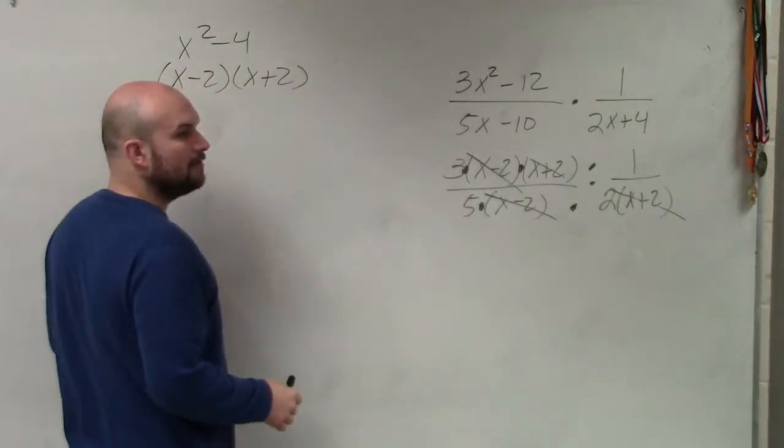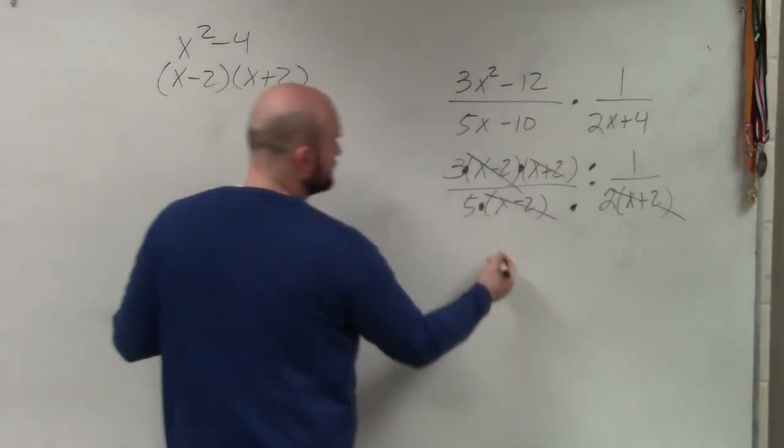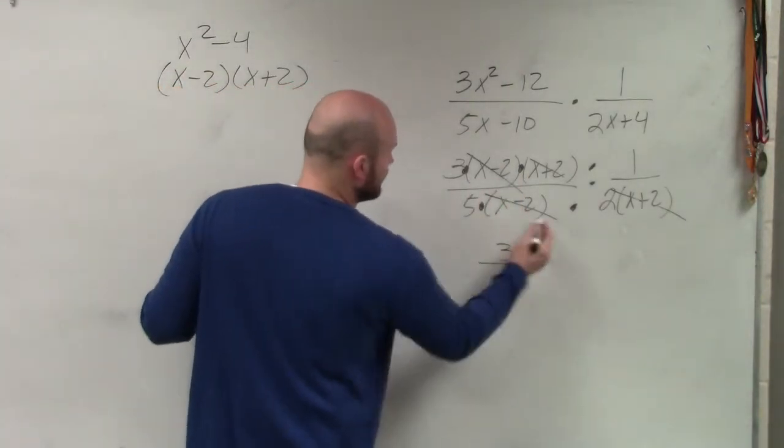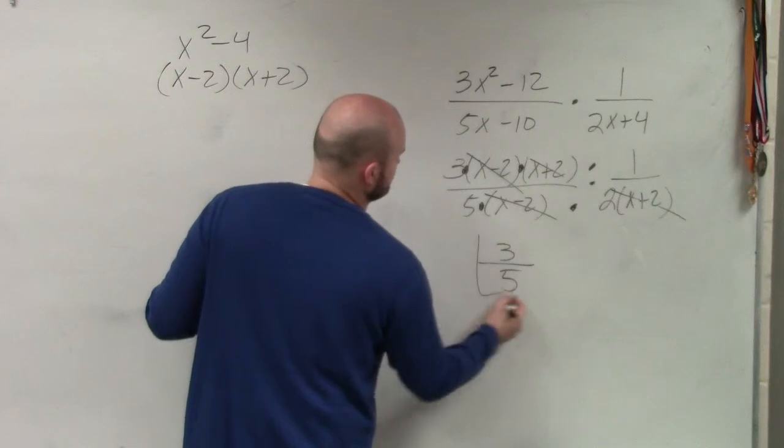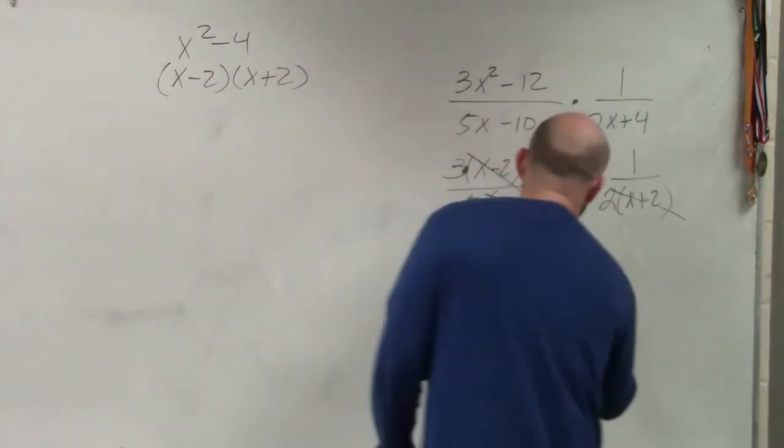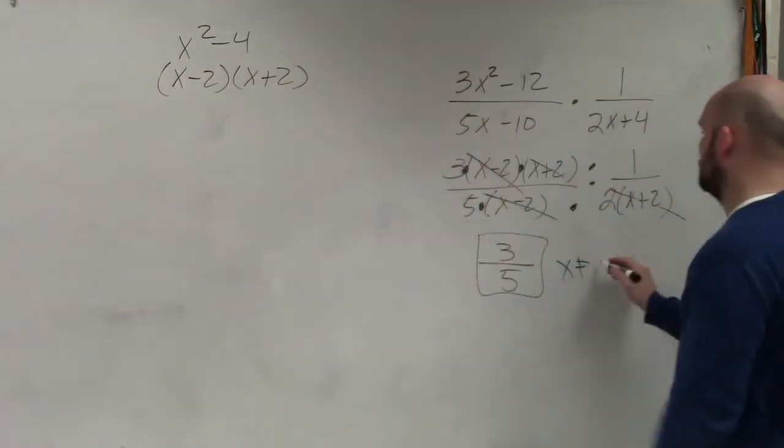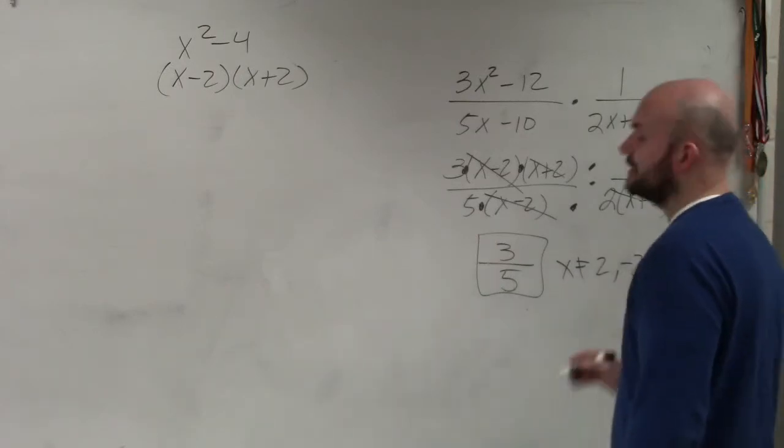So now, by applying my division property, which these divide to 1, I'm left with 3 over 5, where x cannot equal 2 and negative 2.